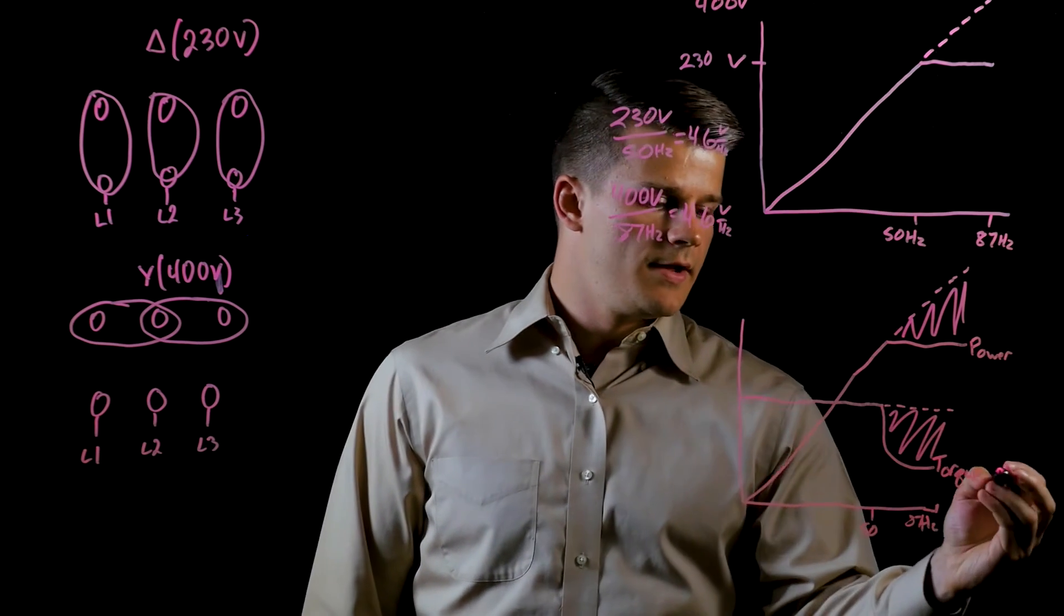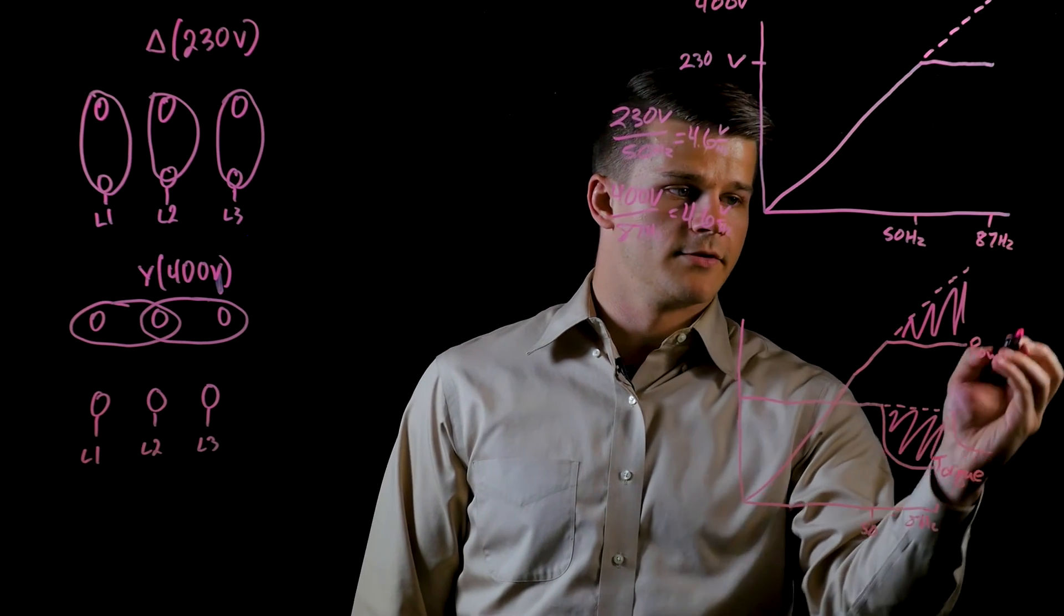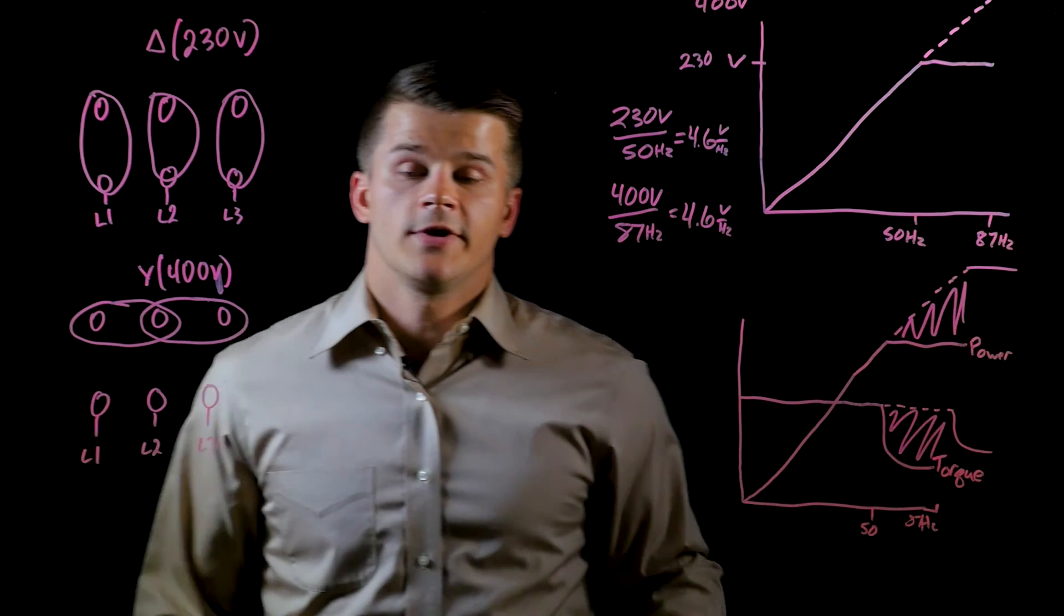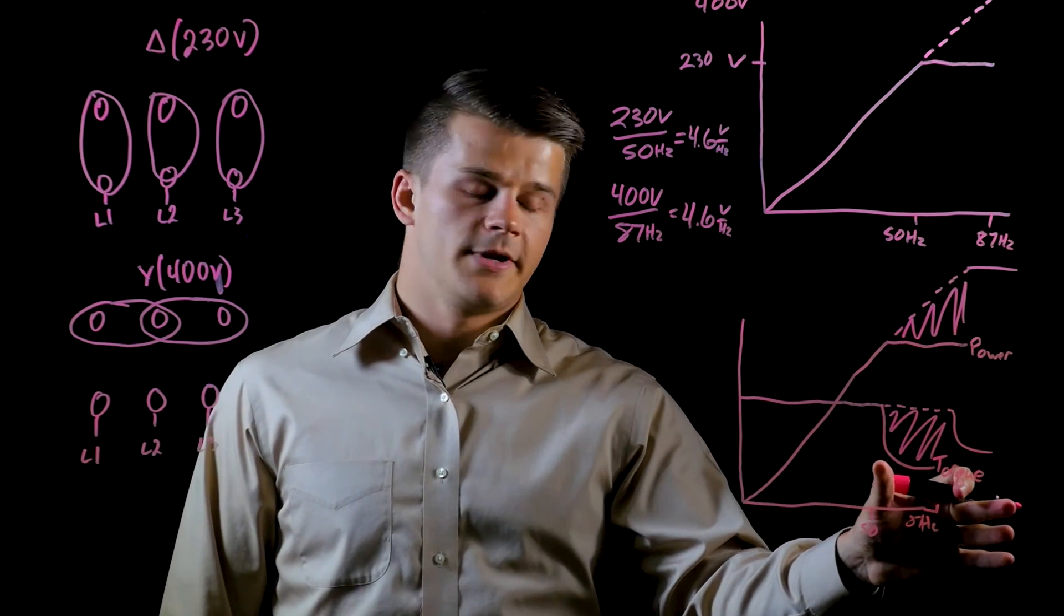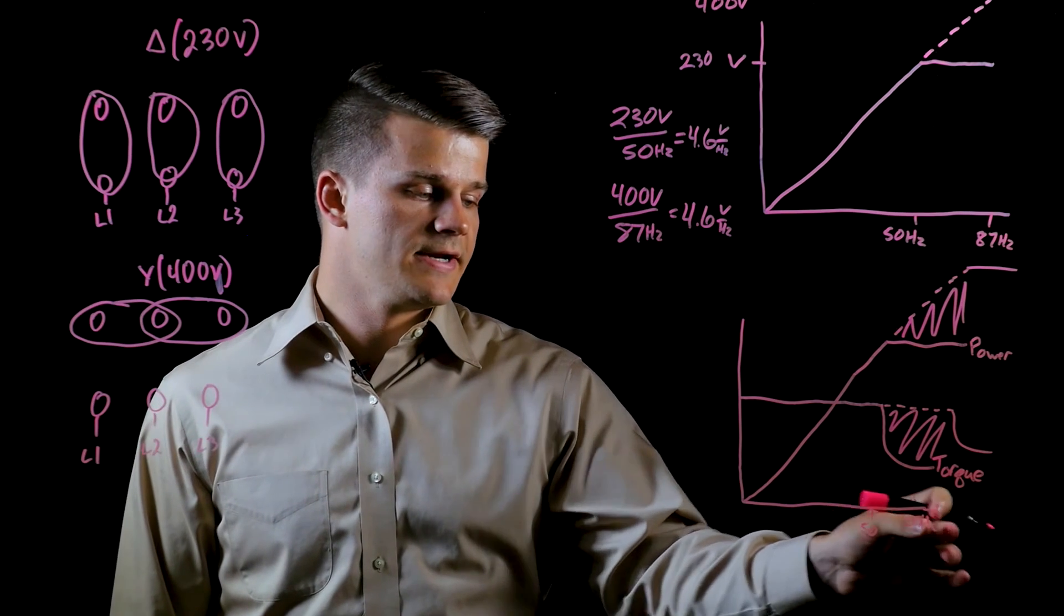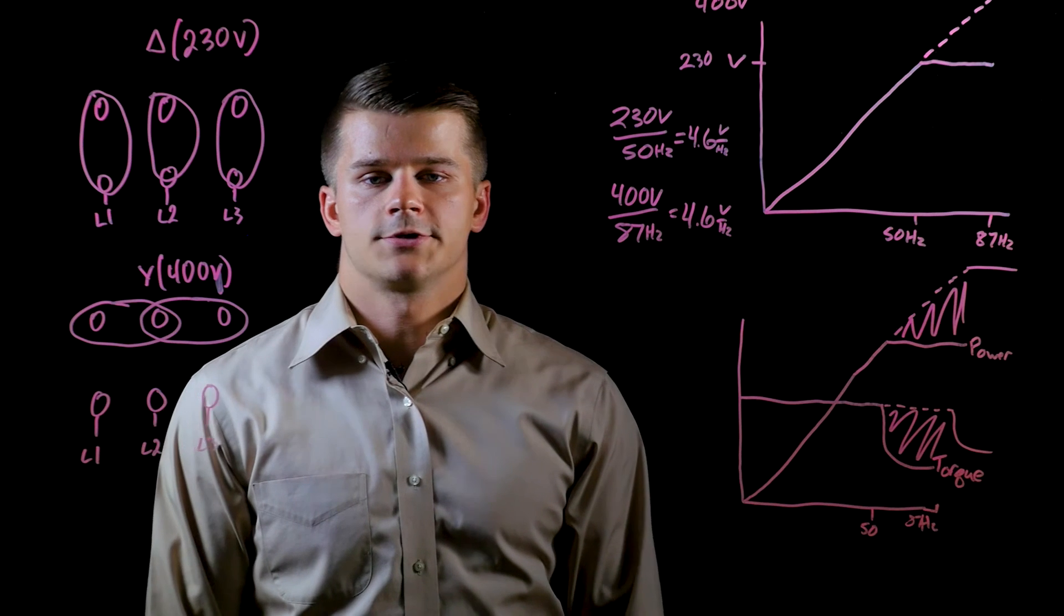Once we hit 87 Hertz, it would do the same behavior as previously. As you can see, we get this extra power and the torque maintains constant from 50 to 87 Hertz in the same IEC rated motor. And that's the 87 Hertz motor trick.